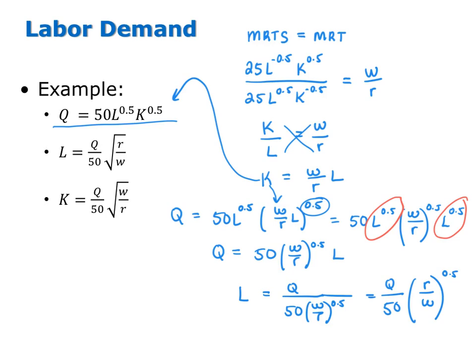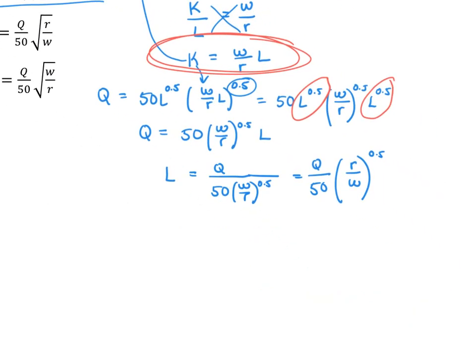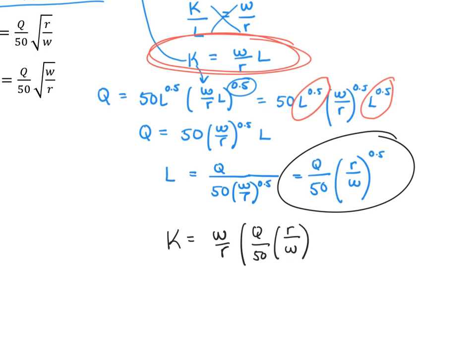Now let's find the demand for capital. One way to do this is to go back and use the result that capital equals W over R times L, where L is Q over 50 times R over W to the 0.5. W and R appear in two places, so we can simplify to get K equals Q over 50 times W over R to the 0.5.